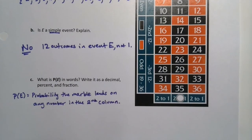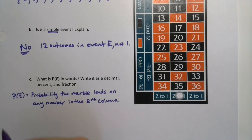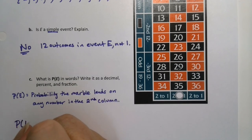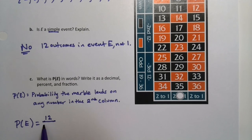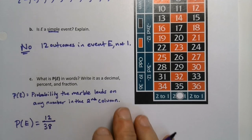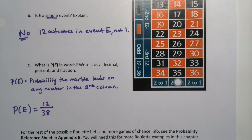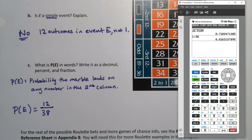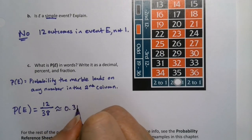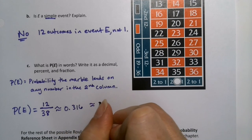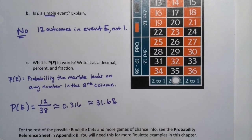What is that as a decimal or a fraction? Let's see here. There's 12 numbers total in that column, there's 38 numbers total. So 12 divided by 38 is 0.316. If I round, that 7 rounds that 5 up, so it's approximately 0.316, which is 31.6%.